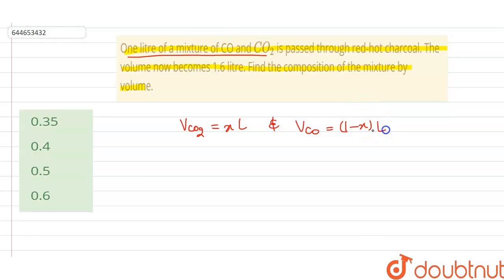An important point to be remembered is that if we write the reaction of CO2 with the red hot charcoal, that is the carbon, then it gives the formation of 2 moles of carbon monoxide.